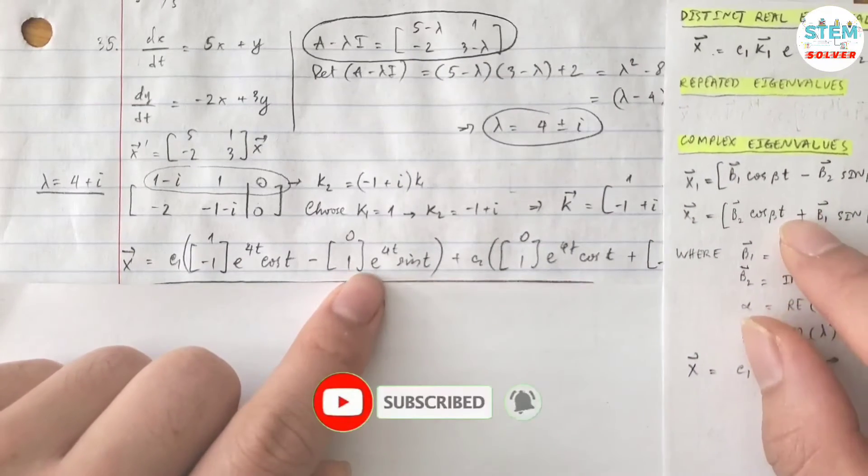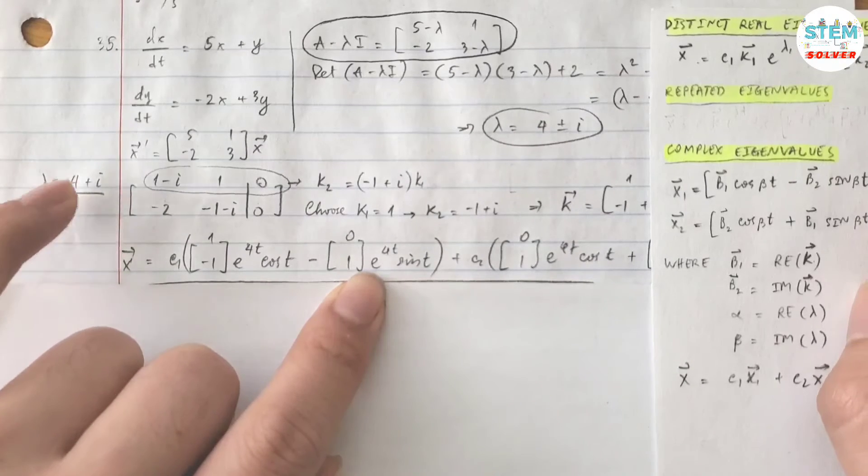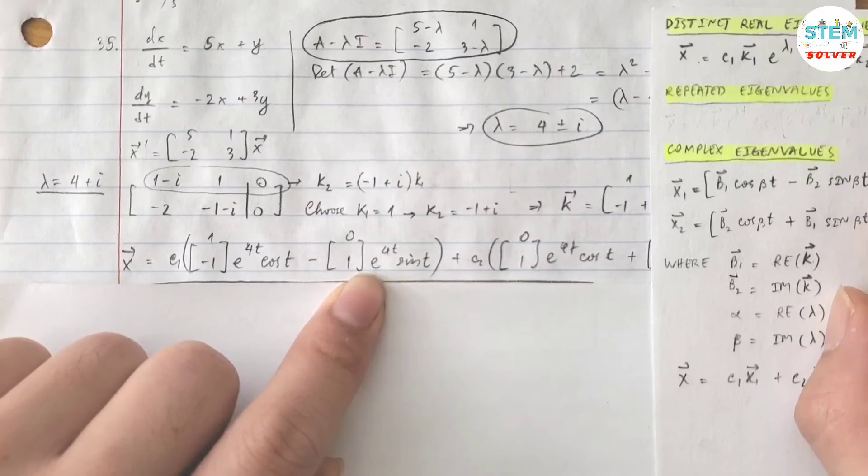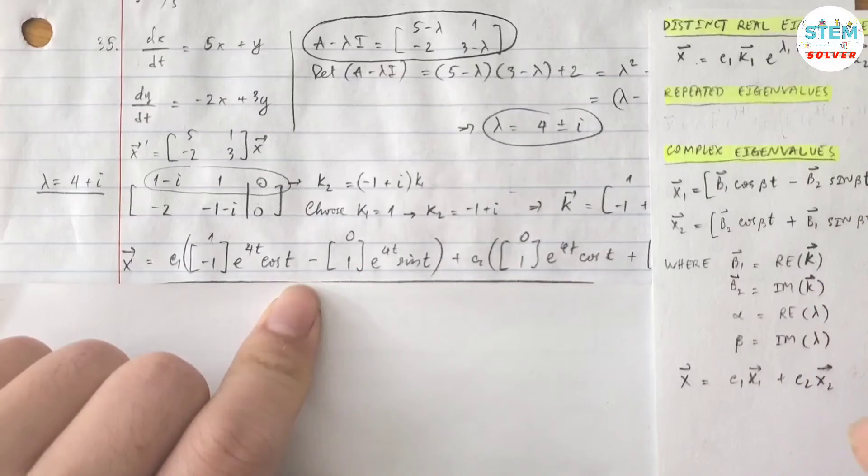And multiply by e to the alpha t. Alpha is real part of lambda which is 4, so you have e to the 4t. In this case I already distributed it in.